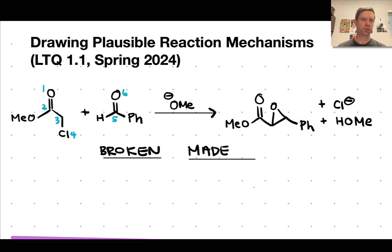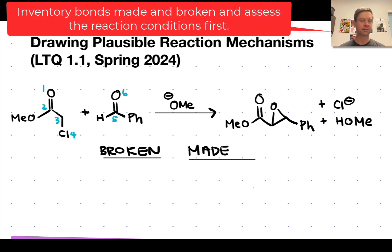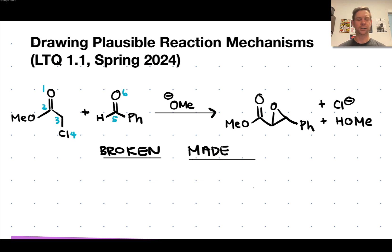Before we dive in and start drawing curved arrows and reactive intermediates, the first thing I want to do is get a broad sense of the bonds made and broken in the reaction and the nature of the reaction conditions. What type of reaction conditions we're dealing with actually constrains the types of plausible reactive intermediates we can draw, since we can't invoke highly acidic cations under basic conditions, and we can't invoke strongly basic anions under acidic conditions.